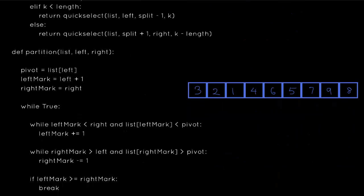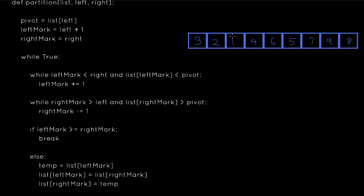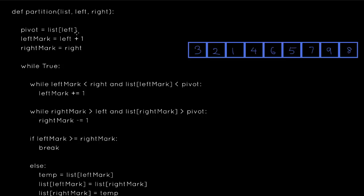The first thing you need to understand is what partitioning is. Partitioning basically means you select one element as the pivot and arrange it in such a way that every element to the left of it will be less than itself and every element to the right will be greater than itself. The position is adjusted so that if you were to sort the entire list, the pivot's position won't change — that is its correct sorted position.